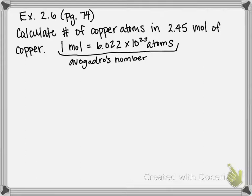So in this problem they want us to calculate the number of copper atoms in 2.45 moles of copper. The strategy for this we're going to adopt the same strategy that we've been using for unit conversions.